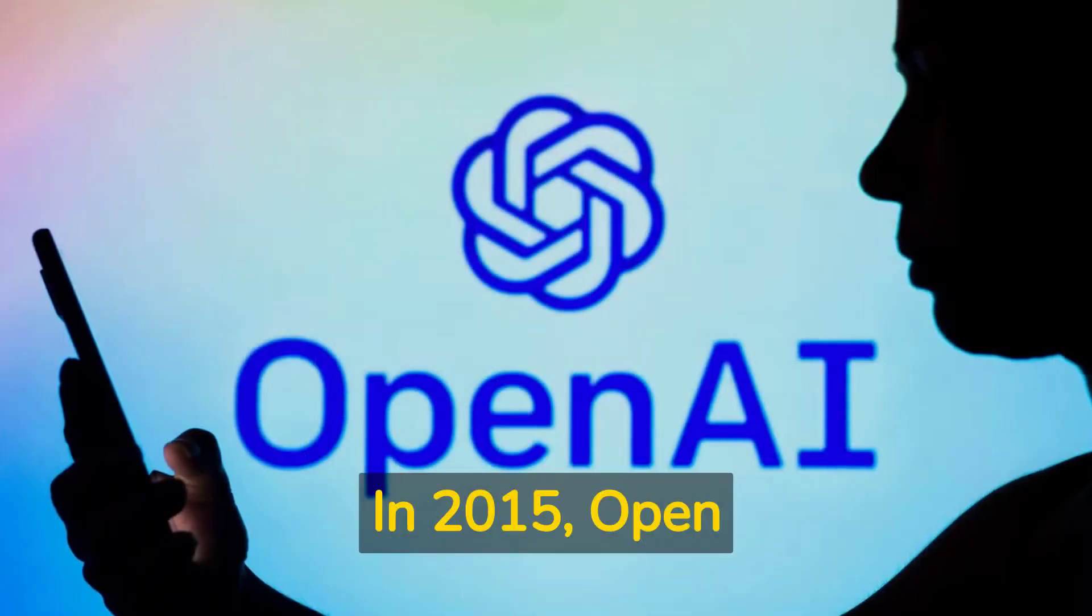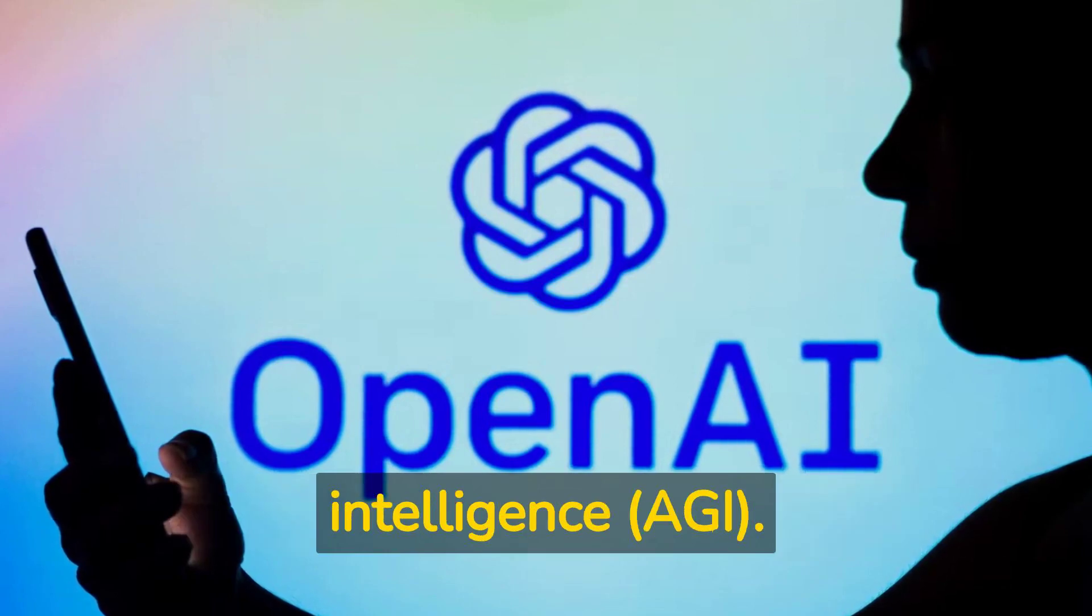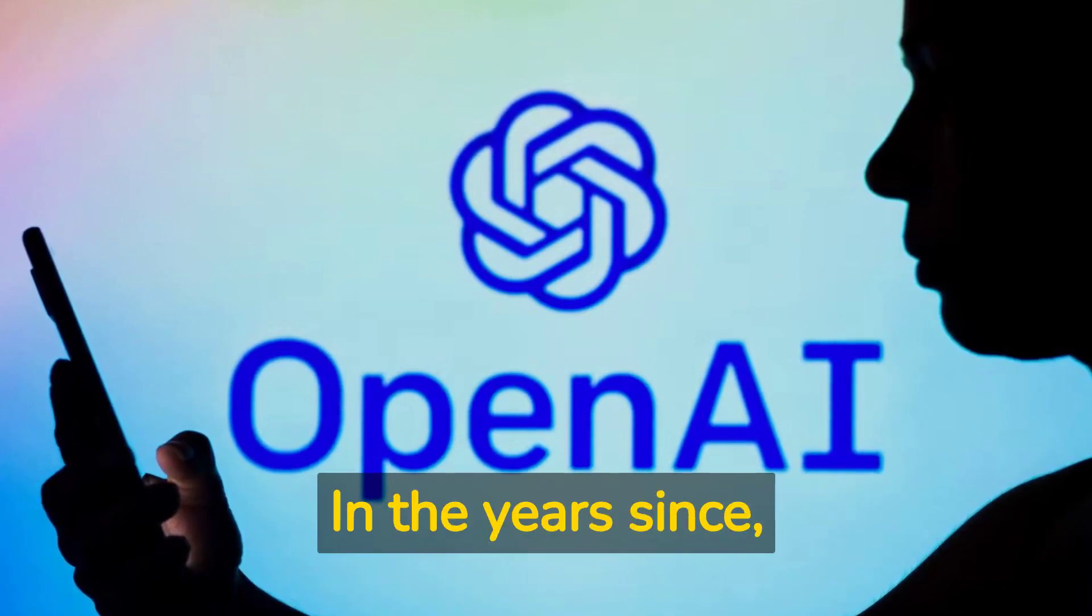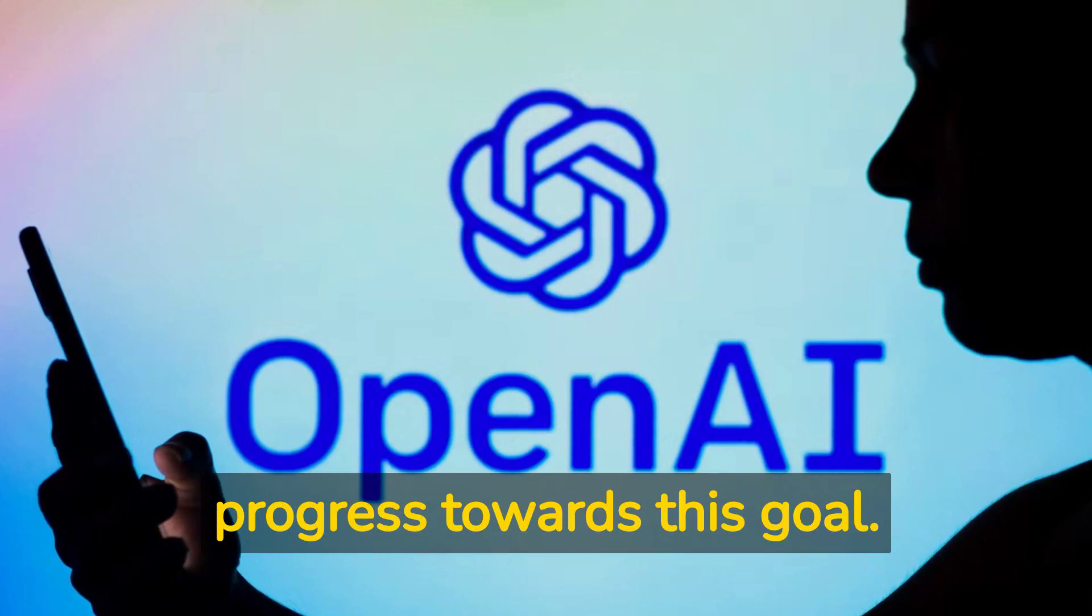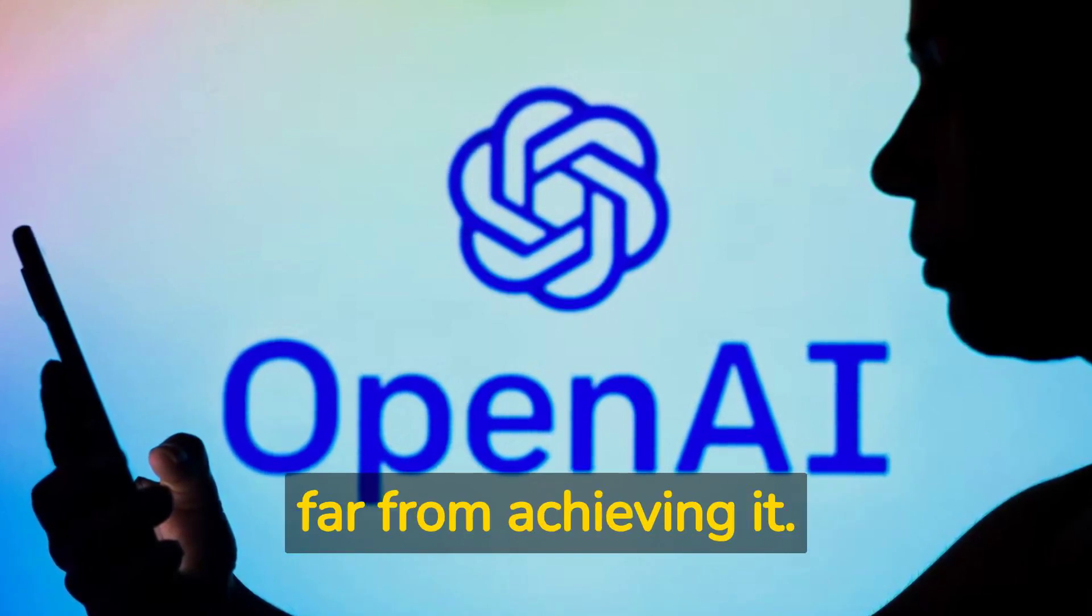In 2015, OpenAI was founded with the goal of building safe artificial general intelligence, AGI. In the years since, they have made significant progress towards this goal. However, they are still far from achieving it.